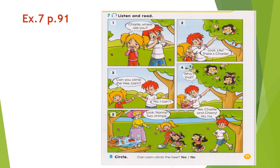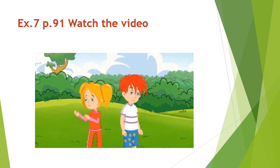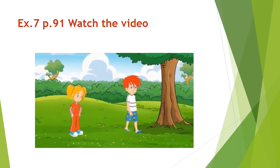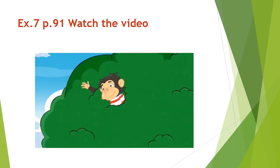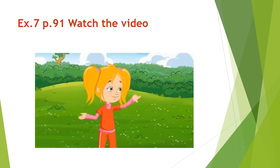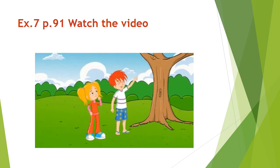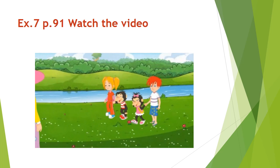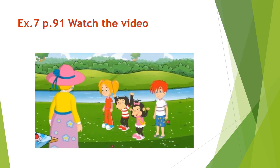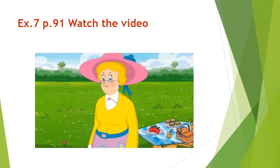Now let's watch the video. Charlie, Charlie, where are you? Look, look Lily, there is Charlie. Can you climb the tree, Liam? No I can't. Who is that? Look Nanny, two chimps! Yes, Charlie and Cherry. Oh dear.